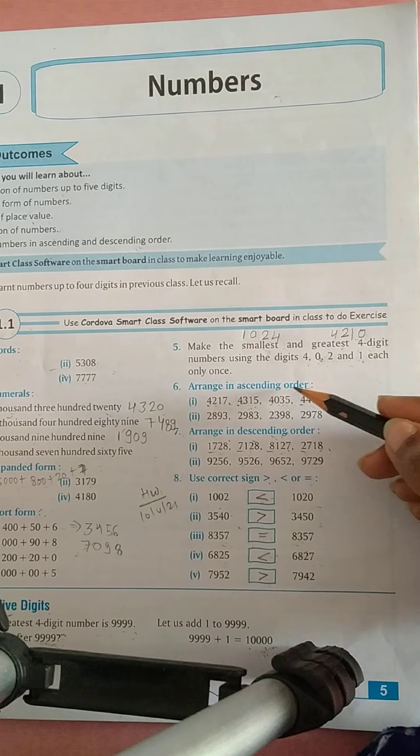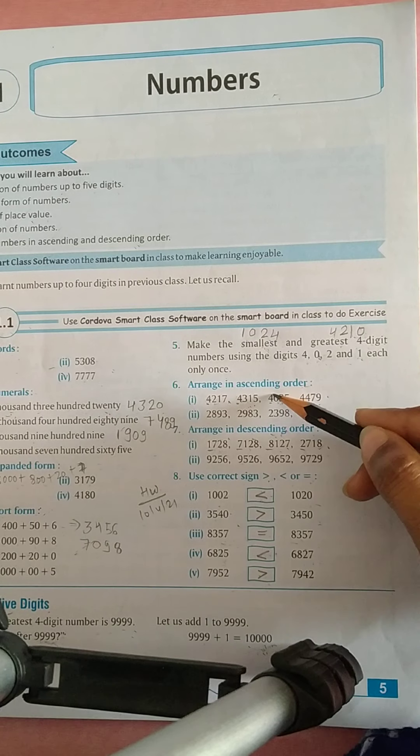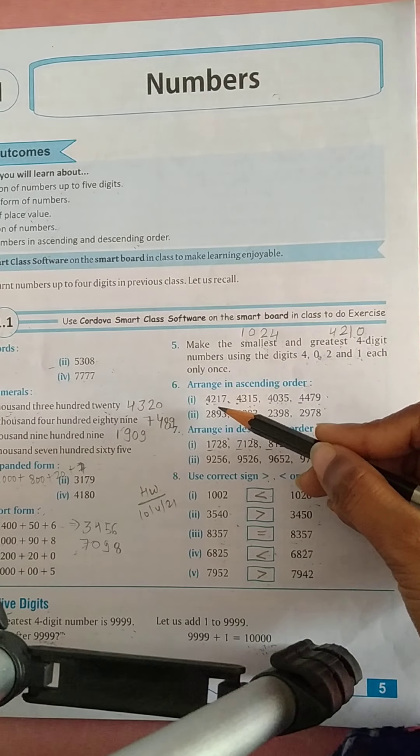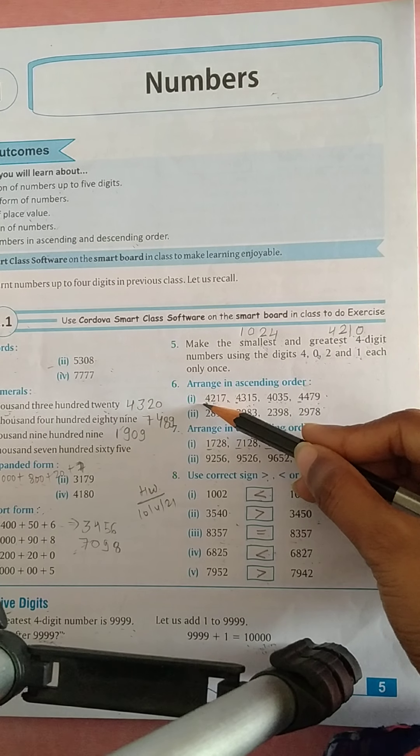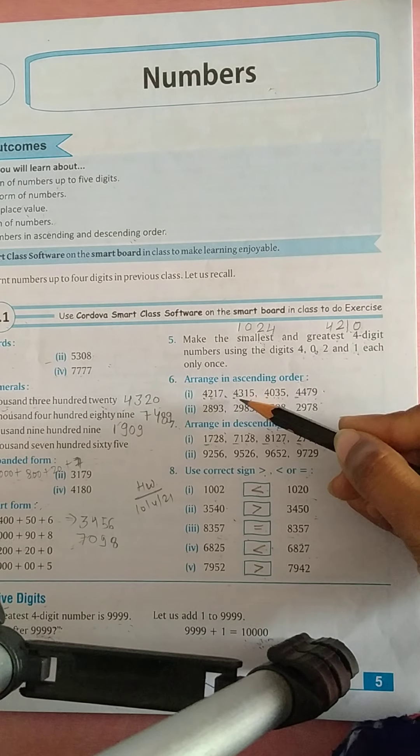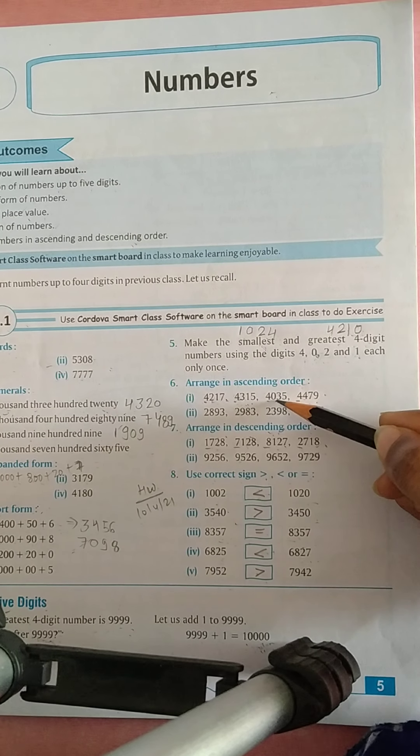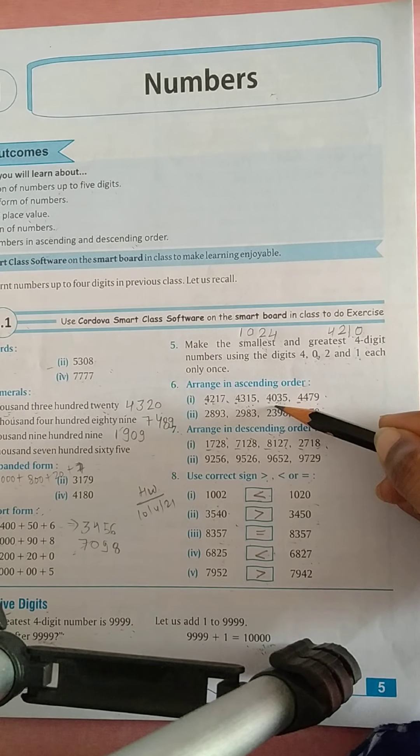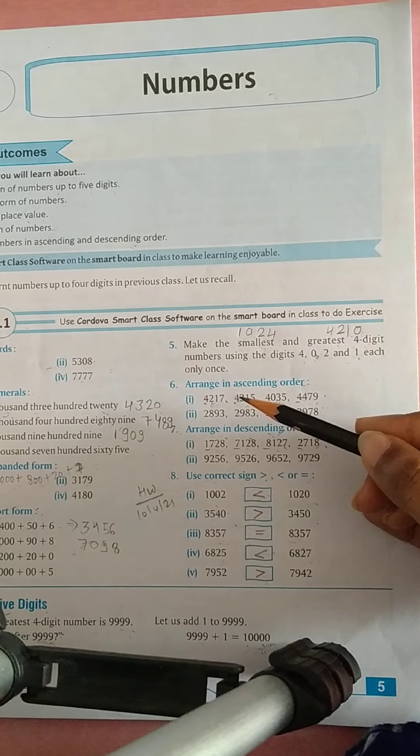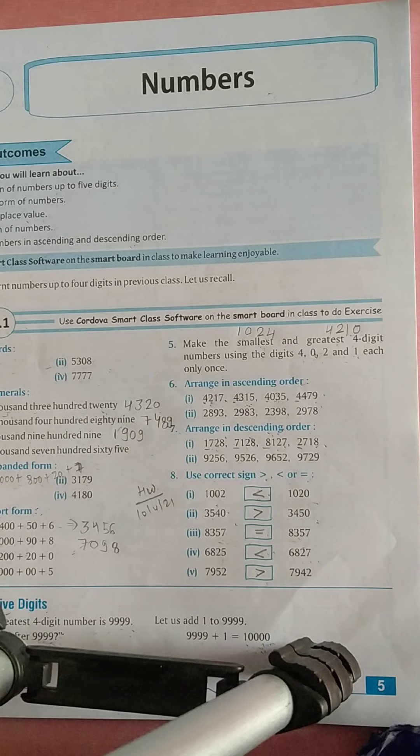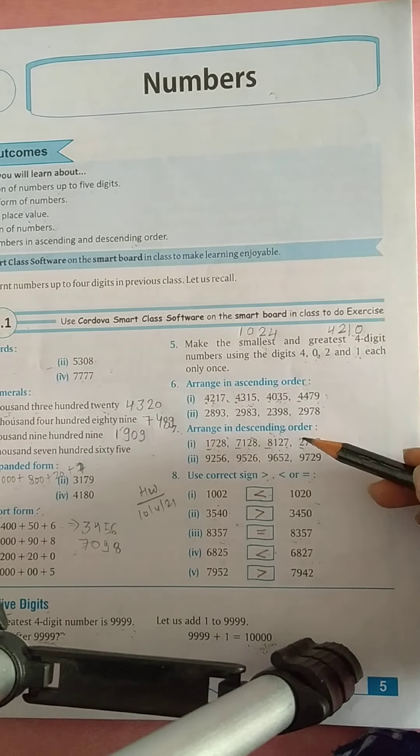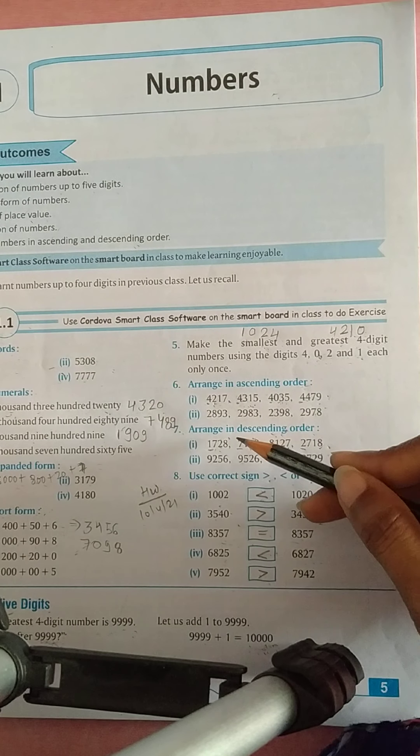Now 6th question, arrange in ascending order. Ascending means smallest to greatest arrangement. So smallest number here, the first digit is 4, the same digit. Then in hundreds place 2, 3, 0 and 4. So 0 is the smallest. So 4,035 is the first number. Then 4,217. Then 4,315. And then last 4,479. Similarly second part is बराना है.